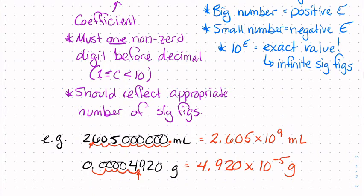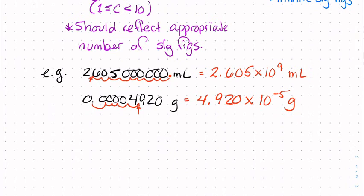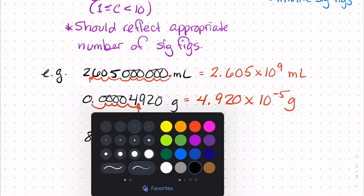You should also feel comfortable going in the other direction, taking a number that is in scientific notation and converting it into a number in standard notation. If, for example, we had 8.95 times 10 to the 4th meters, a positive exponent tells us this is a big number. To make this number 8.95 bigger, we're going to move our decimal to the right, and we're going to move it to the right 4 places.